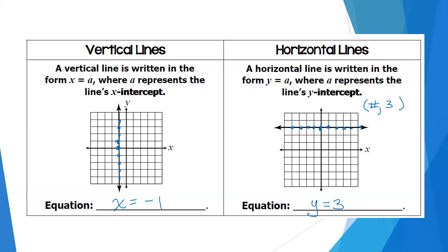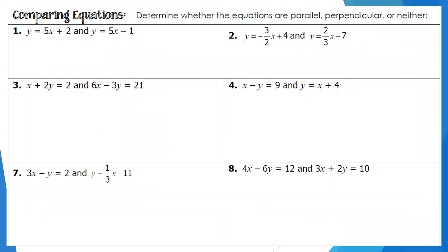Remember: vertical lines are x equals a constant, and horizontal lines are y equals a constant. Now, why do we need to do all this algebra with lines in a geometry class? We're going to determine whether lines are parallel, perpendicular, or neither. If the slopes are the same, the lines are parallel. If the slopes are opposite reciprocals, the lines are perpendicular. Otherwise, they are neither.